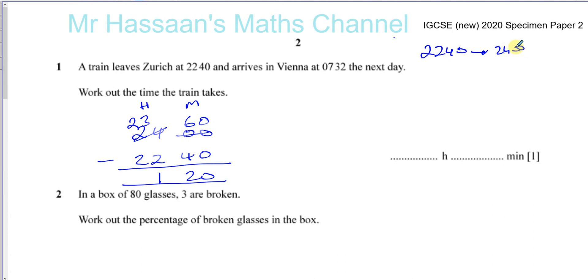So that's one hour and 20 minutes between 22:40 and midnight. So you've got 22:40 to midnight, which is 24:00 hours. And then you've got from 24:00 hours, which you can consider as 00:00, up to 07:32. So now we've got to basically add seven.